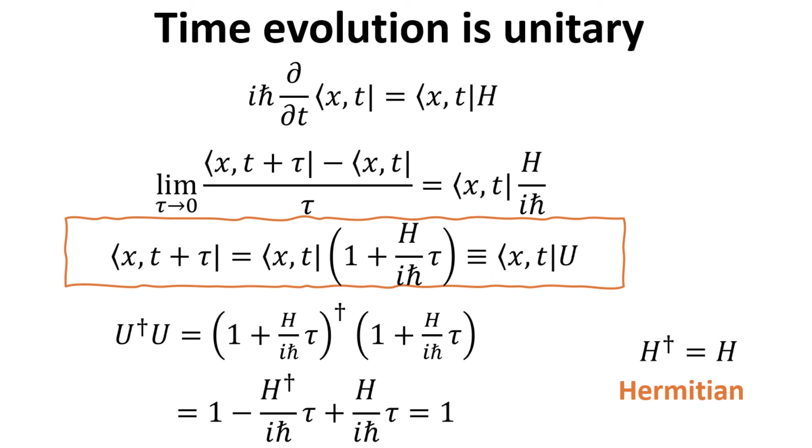We define the operator that generates this infinitesimal time evolution as u. To check if u is unitary, we take the product of u dagger with u, and we can show that this is unity provided that the Hamiltonian H is Hermitian, which it is. Thus the time evolution operator u is unitary.